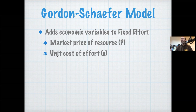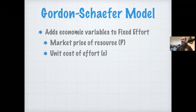We're also going to assign a cost to the effort we put into harvesting — a unit cost per unit effort. Instead of modeling effort as a proportion of the harvest we take, we're going to model effort in economic terms: man hours, number of boats, cost of gear — all costs associated with running the harvest — and assume these scale with the amount of effort you put in. If you want to harvest more, you need more man hours or more boats.